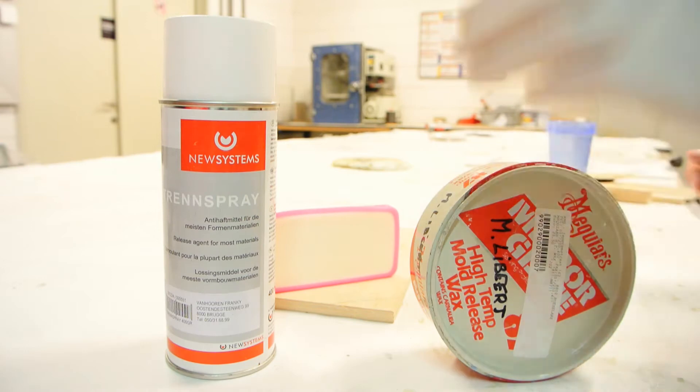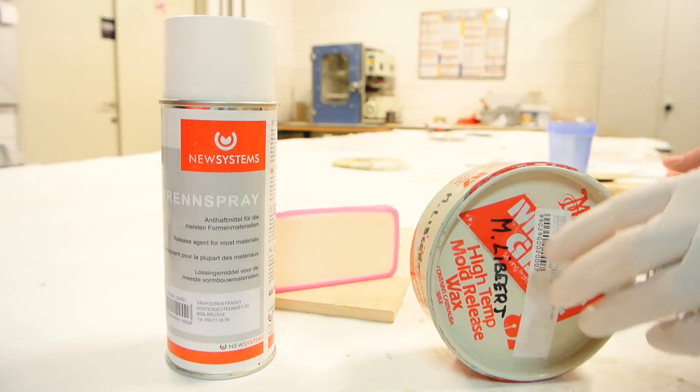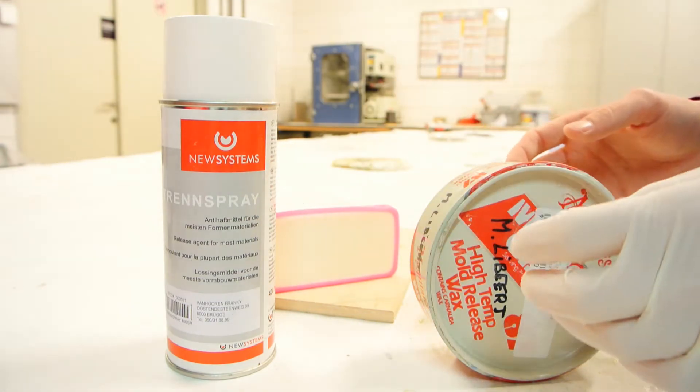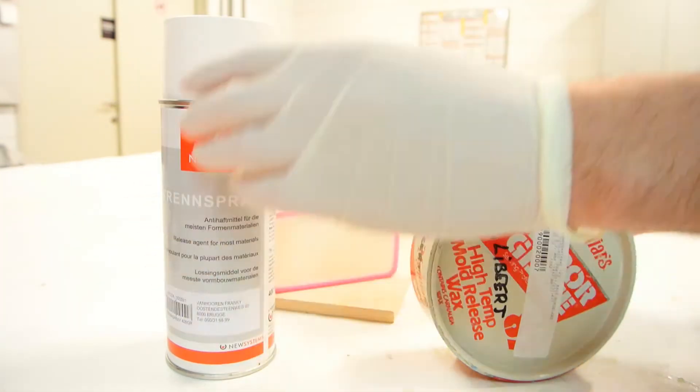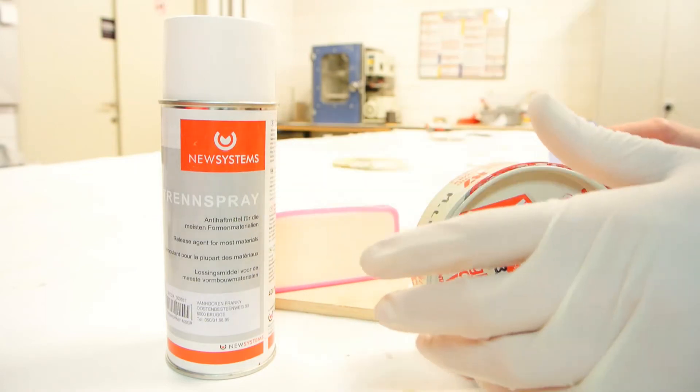Okay, so I'll be using two release agents. I have good results with it. So this is just a wax and this is a spray. Just as a last resort, I'll just add some of these just to make sure that parts release easily from the mold.